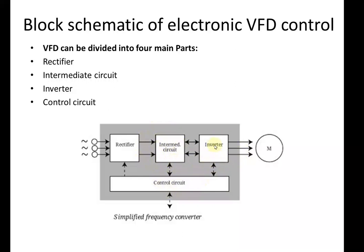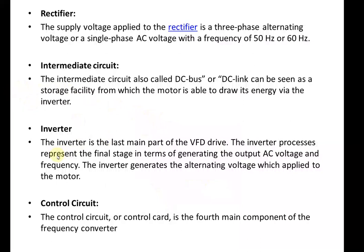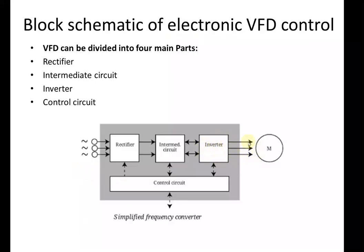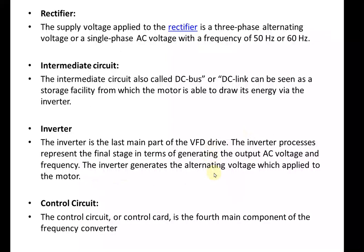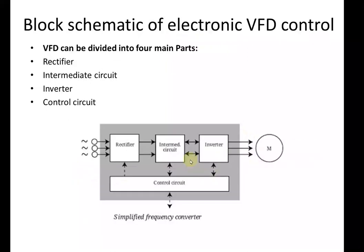The third part is the inverter — the main part of the variable frequency drive. We require the input voltage to the motor to be alternating, so this is the main stage. The inverter represents the final stage in generating the output AC voltage and frequency. It takes the input from the intermediate circuit — which is pulsating or pure DC voltage — and gives alternating voltage to the motor, because the motor requires AC voltage at its input.